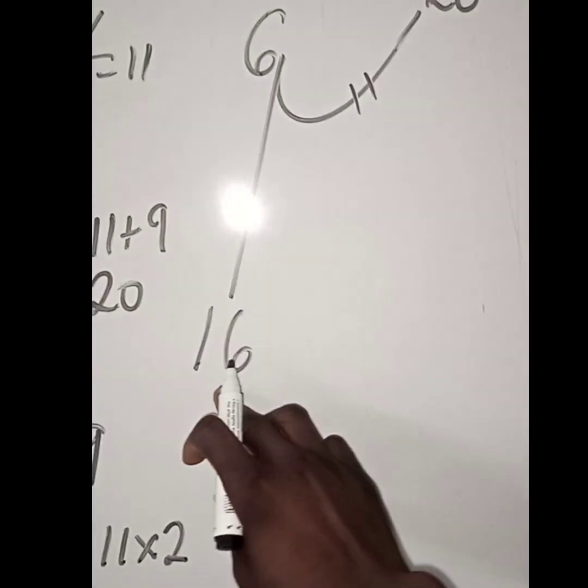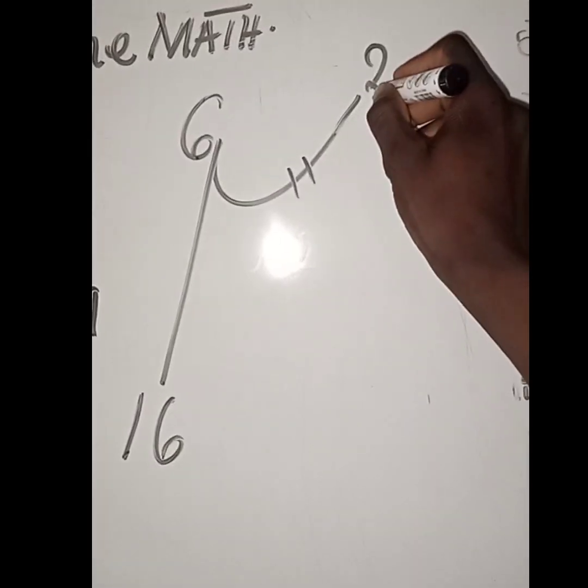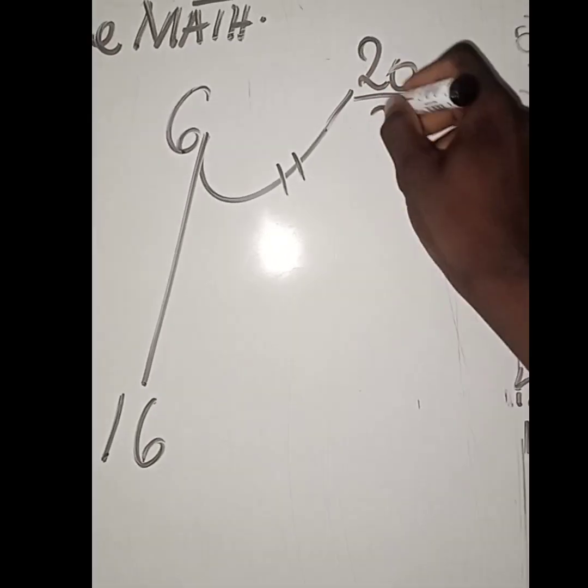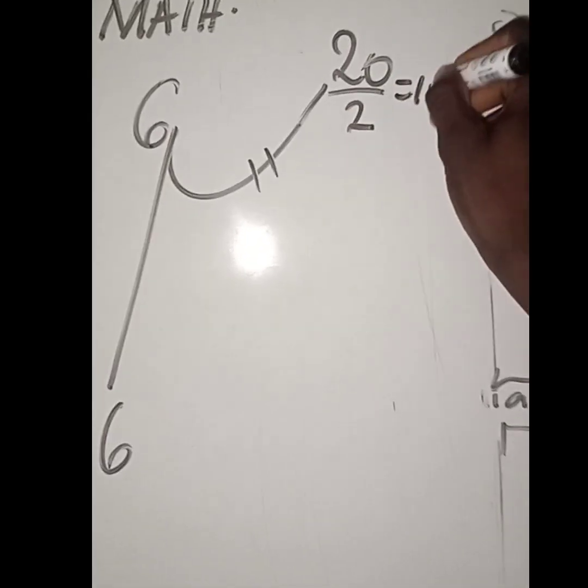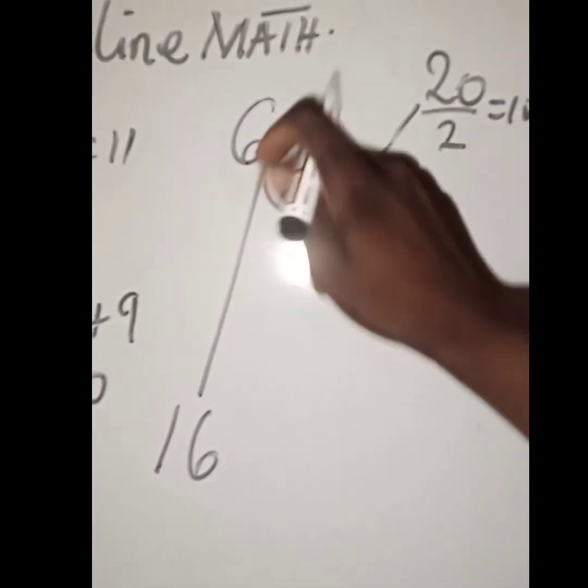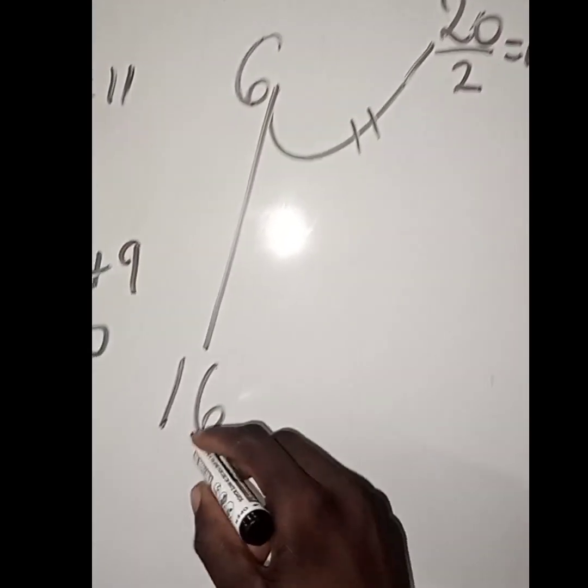If you want to get the 16 down here, we are going to divide the 20 up here by 2, which will give you 10. So 10 plus 6 will give you 16.